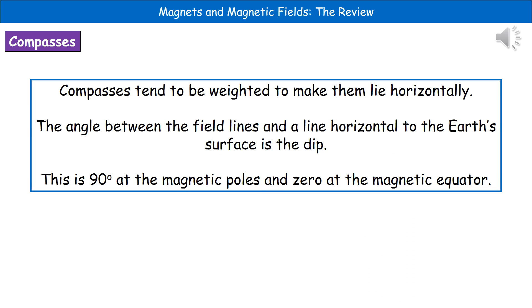When we're thinking about the actual design of a compass, then we need to have them weighted because otherwise they don't lie horizontally. So we actually make them weighted as the needle so they do lie horizontally within the actual device itself. Now, what we find is that we've got an angle between the field lines and a line horizontal to the Earth's surface, and that's known as the dip. So what we find is if we look at the actual degree value of that dip in different places, then when we're at the actual magnetic poles, then it's at 90 degrees. Whereas if we're at the magnetic equator of the Earth, then it's zero. But what that tells us is that if we didn't weight the compass itself, then it wouldn't lie flat and therefore it wouldn't work as the device which we all know and use.